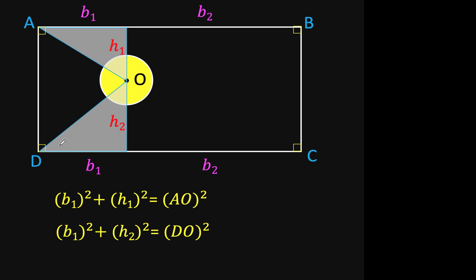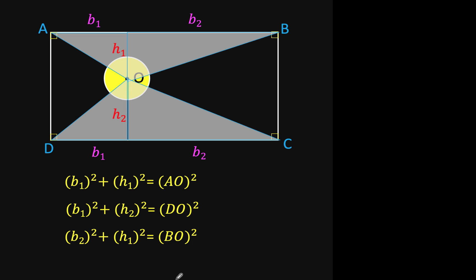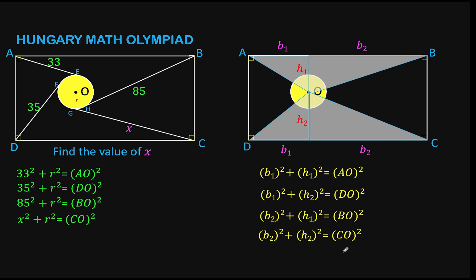Similarly, we can draw again this other right triangle. And from the Pythagorean formula, we have B sub 2 squared plus H sub 1 squared is equal to BO squared. And finally, we have here another right triangle. And the resulting equation is the square of this base plus the square of this height is equal to the square of this hypotenuse CO.